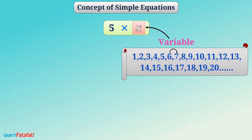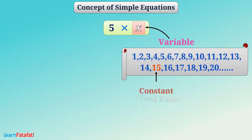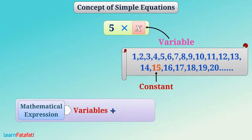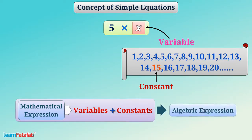If we think about the number 15, it has a fixed value. We can say that it is a constant. The mathematical expression formed using variables and constants is called an algebraic expression.